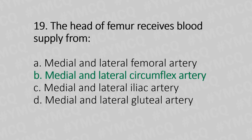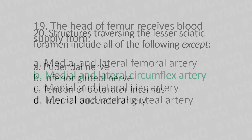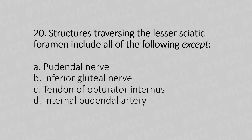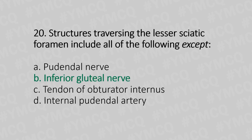Question 20: Structures traversing the lesser sciatic foramen include all of the following except — Option A: pudendal nerve. Option B: inferior gluteal nerve. Option C: tendon of the obturator internus. Option D: internal pudendal artery. The answer is option B — inferior gluteal nerve.